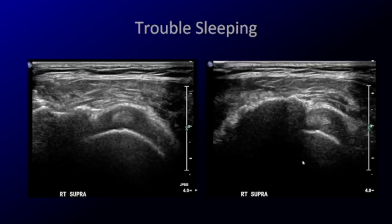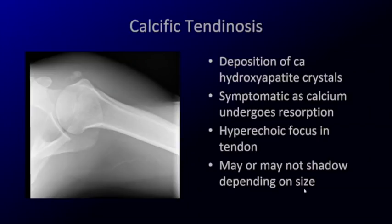That hyperechoic structure represents calcific tendinosis — another form of tendinosis — where there is deposition of calcium hydroxyapatite crystals. This can be painful either due to resorption of the crystals or due to rupture of that intratendinous deposit, which can cause a bursitis.